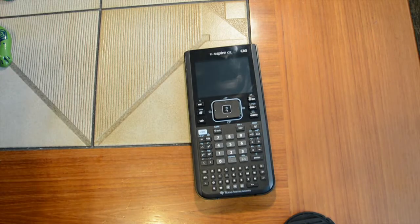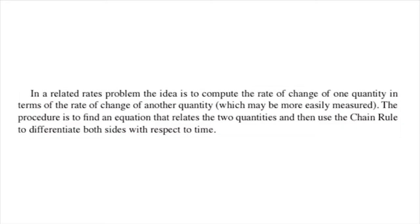The book gives the definition that in a related rates problem, the idea is to compute the rate of change of one quantity in terms of the rate of change of another quantity, which may be easily measured. The procedure is to find an equation that relates the two quantities, and then use the chain rule to differentiate both sides with respect to time.